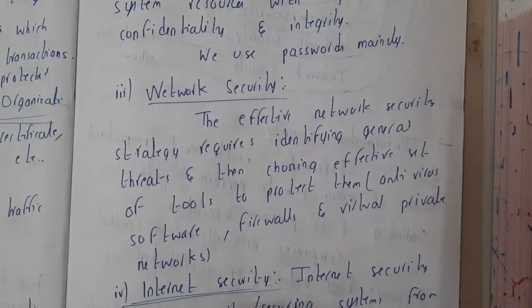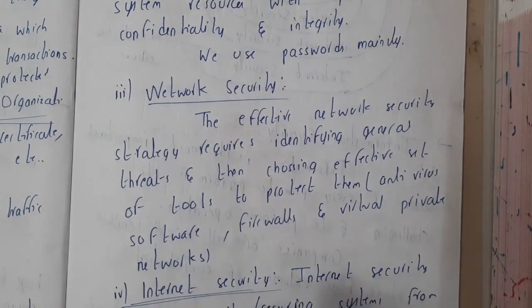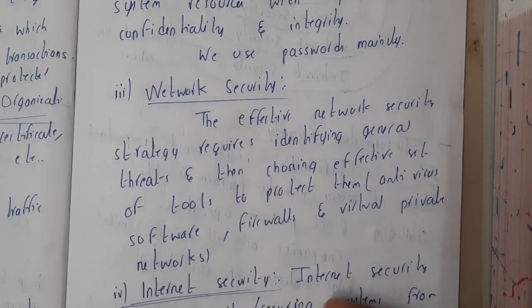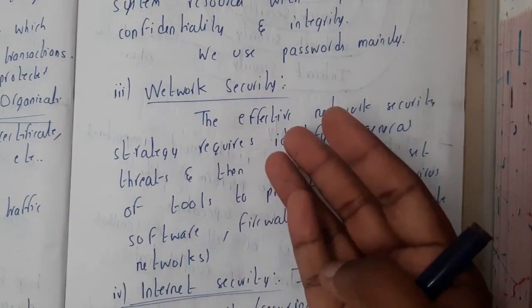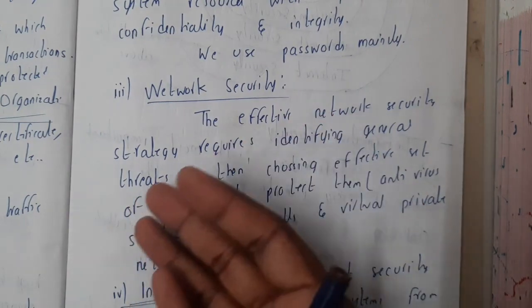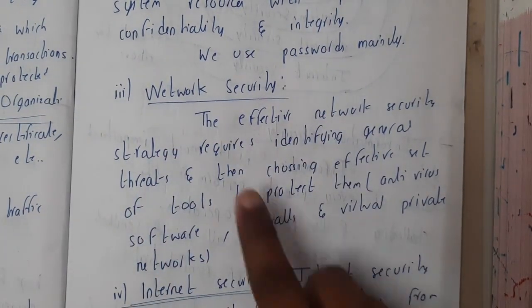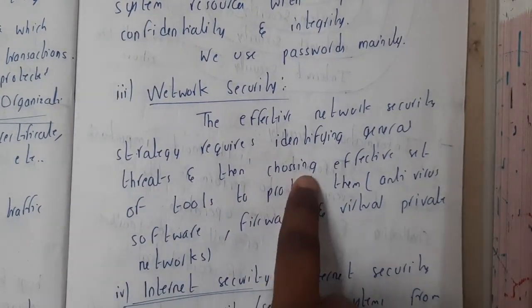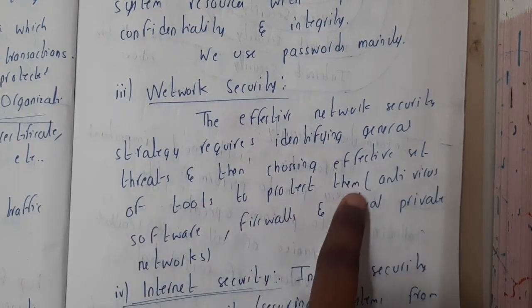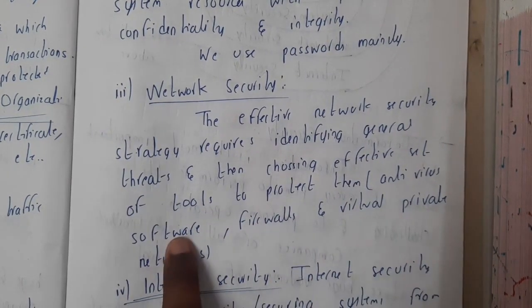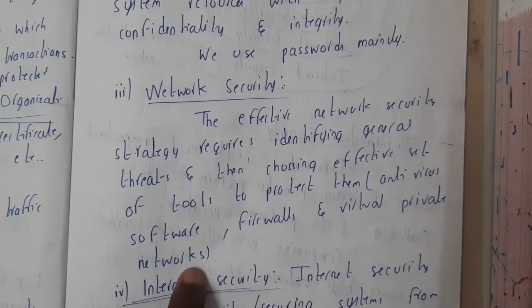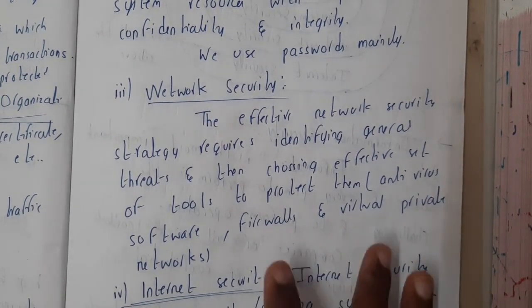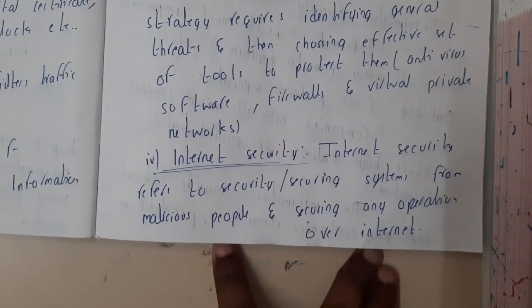When it comes to network security, there could be virus attacks, hackers, or threats. To secure against them, we use firewalls, antivirus software, and virtual private networks. Efficient network security strategies require the identification of threats and then deploying an effective set of tools like antivirus software, firewalls, and VPNs. We'll be discussing firewalls and virtual networks in the second or third unit.